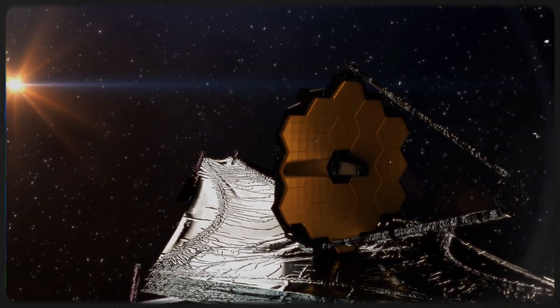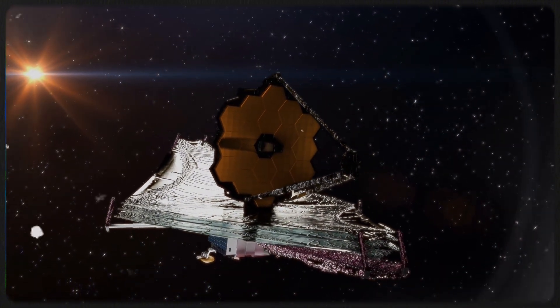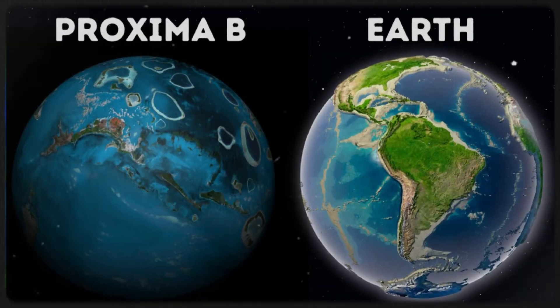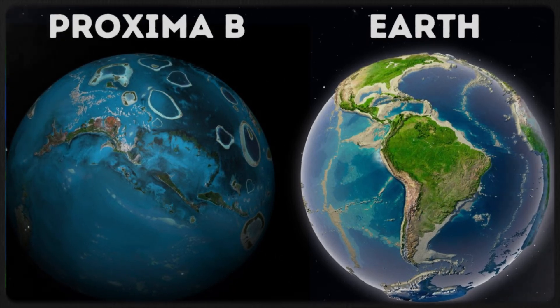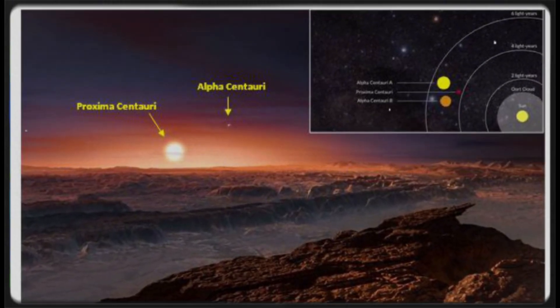This discovery was made possible by NASA's powerful telescopes, which have been meticulously observing distant stars and planets in the quest for evidence of extraterrestrial life. Due to its Earth-like qualities and proximity to our solar system, Proxima B has always been a strong candidate for finding intelligent life.